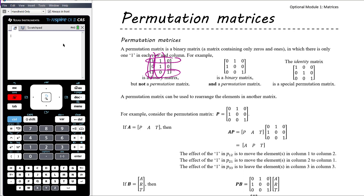The second example is a binary matrix and is a permutation matrix. If we look at every single column, in each column there's only one one. Additionally, in each row there is also only one one. So that's a permutation matrix.